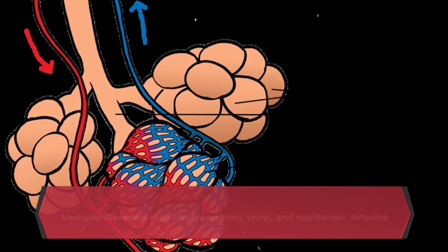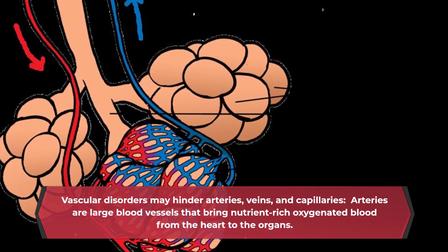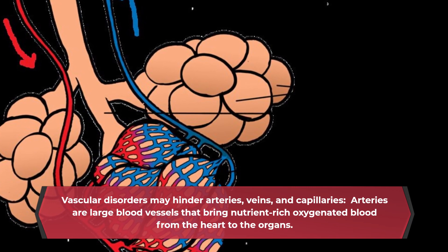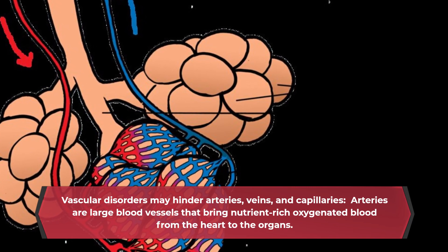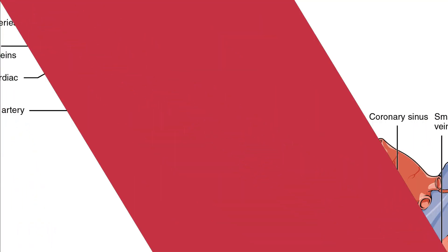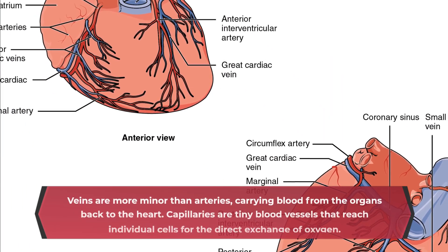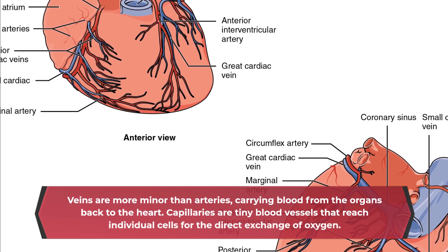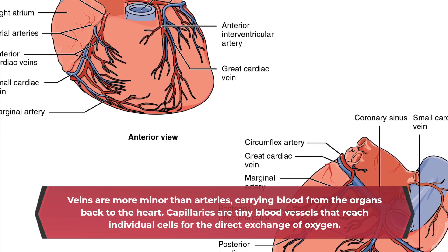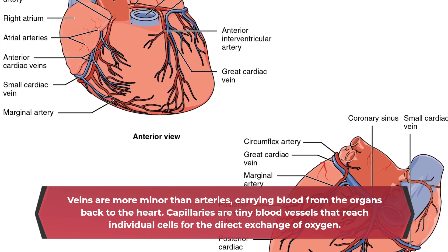Vascular disorders may hinder arteries, veins, and capillaries. Arteries are large blood vessels that bring nutrient-rich oxygenated blood from the heart to the organs. Veins are more minor than arteries, carrying blood from the organs back to the heart. Capillaries are tiny blood vessels that reach individual cells for the direct exchange of oxygen.